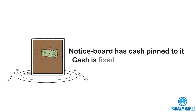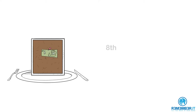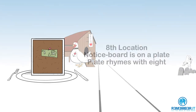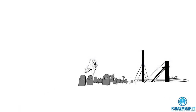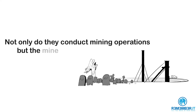The eighth location is the CFAVIL notice board — a strange notice board because it's sat on top of a massive plate. The notice board has some cash pinned to it, so this cash is fixed to the notice board. As such, this is where the fixed income part of the syllabus is covered. You know it's the eighth location because the notice board is on a plate, and plate rhymes with eight.